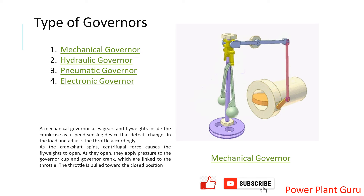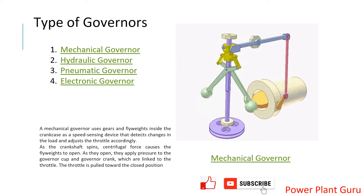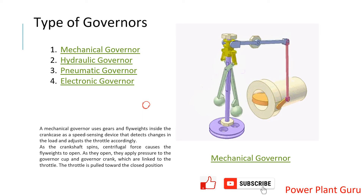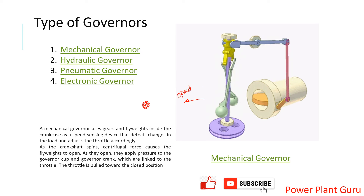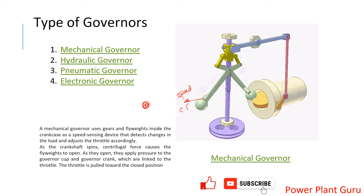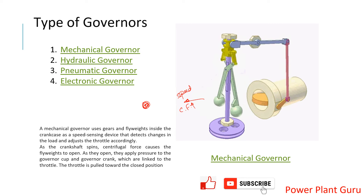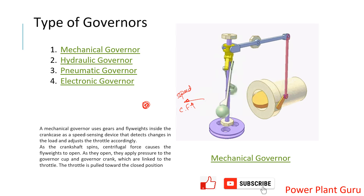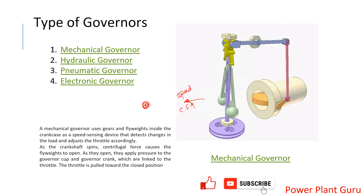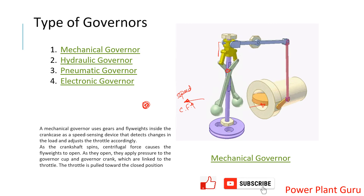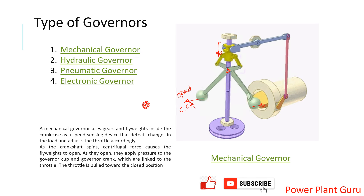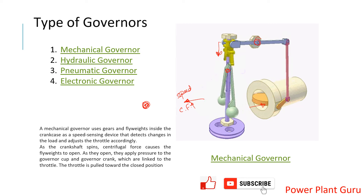You can see these two fly balls — the circular ones have metallic ball weights. When the RPM increases, centrifugal force increases, and that causes the fly balls to move outward in both directions. This movement acts against the spindle, causing the sleeve to move down.